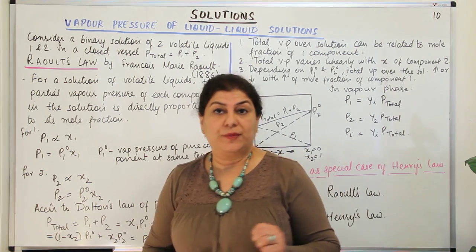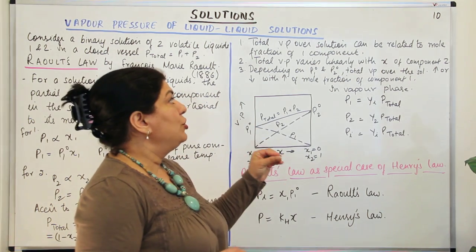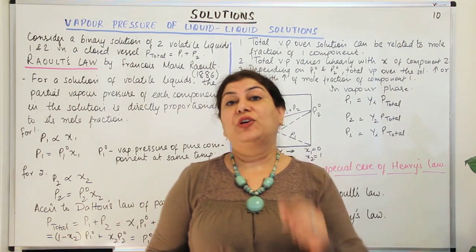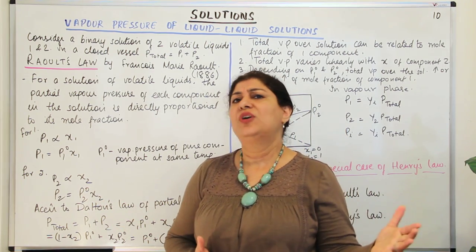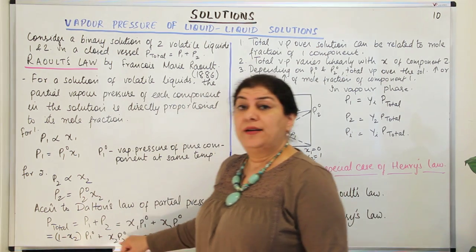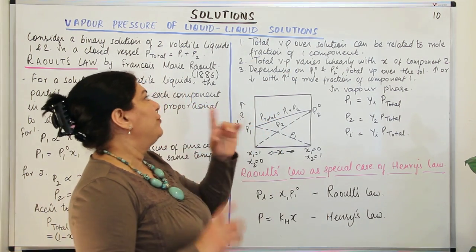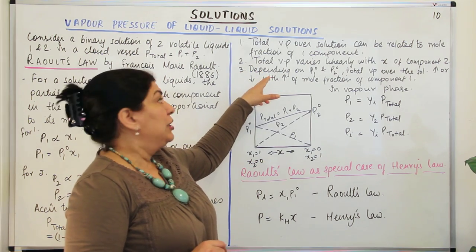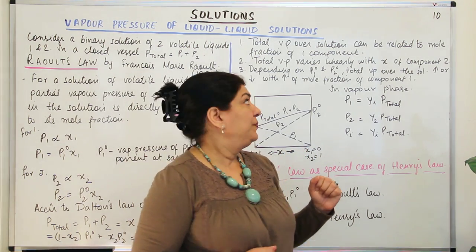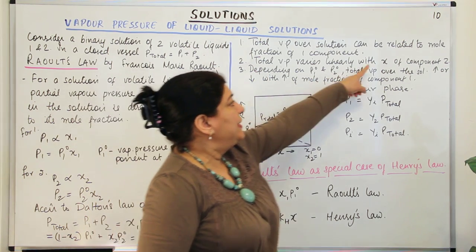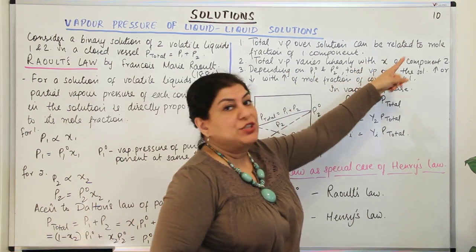The first conclusion Raoult found is that the total vapor pressure over the solution can be related to the mole fraction of just one component. If you know the mole fraction of one, you can deduce the other. The second conclusion from this equation is that total vapor pressure varies linearly with X2, the mole fraction of component 2. The total vapor pressure changes in the form of a straight line, varying from P1⁰ to P2⁰ — and that too linearly, because it is directly proportional.